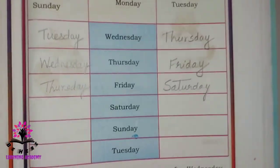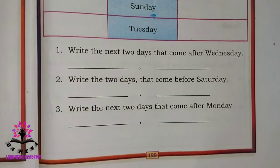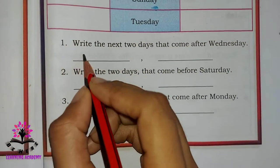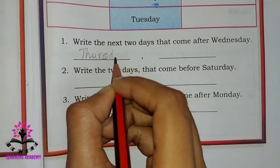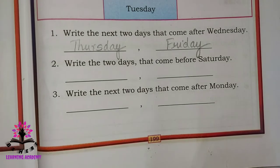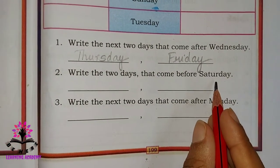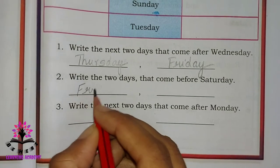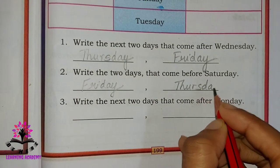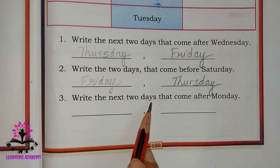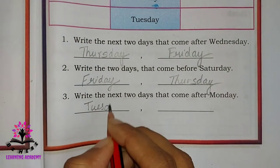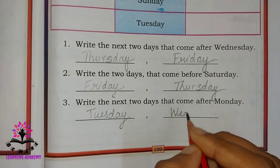The remaining three you have to write by yourself. Write the next two days that come after Wednesday: after Wednesday is Thursday and Friday. Write two days that come before Saturday: before Saturday is Friday, and before Friday is Thursday. Write the next two days that come after Monday: after Monday is Tuesday and Wednesday.